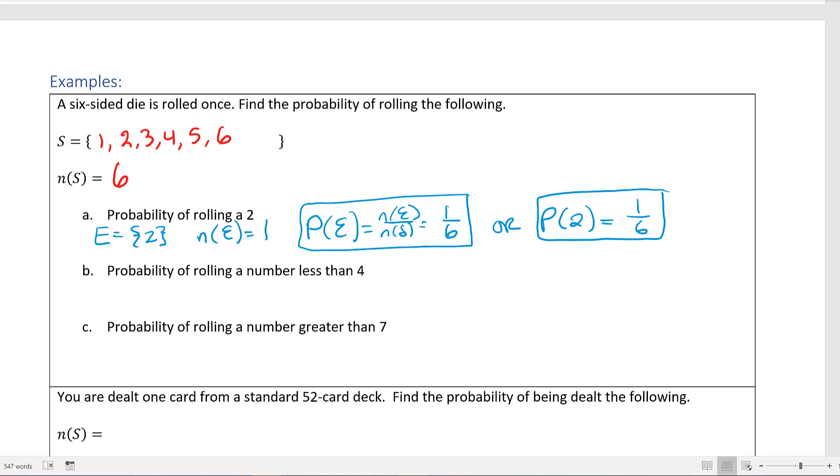Our next problem is what's the probability of rolling a number less than 4. Okay, so this event is different. Less than 4: 1 is less than 4, 2 is less than 4, and 3 is less than 4, but 4 is not less than 4. So we just have 1, 2, and 3. So n(E) this time is 3. There's three different ways that you could have a number less than 4. So the probability of this event is going to be 3 out of 6, and I can reduce that to 1/2.